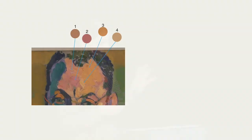Determining the difference in value between two colors is harder than you would think. Let's zoom in on this Duran painting — this is actually a portrait of Henri Matisse. I need some audience participation. Which hue do you think would be the darkest value? On a scale of white to black, that's what we're determining.